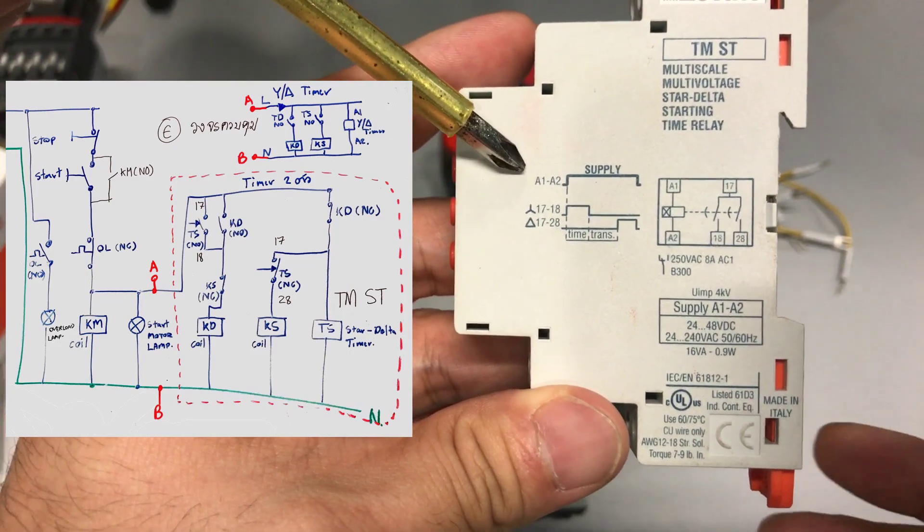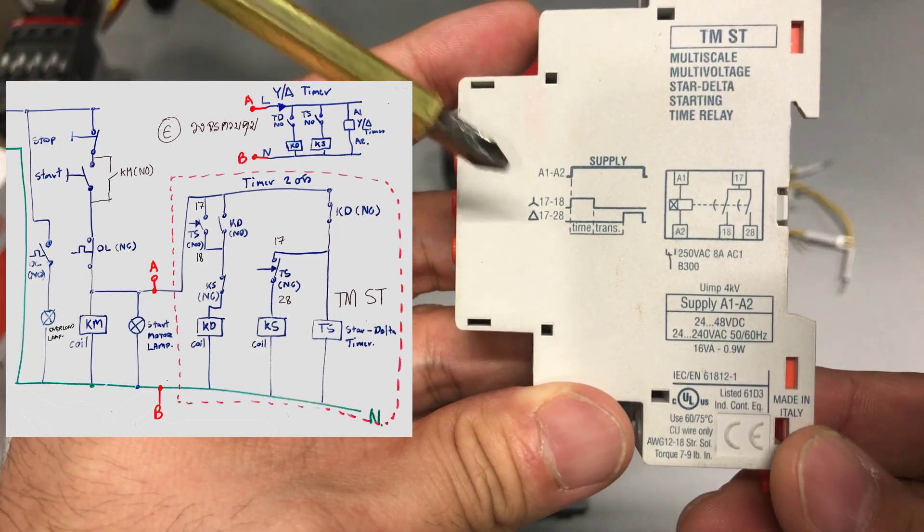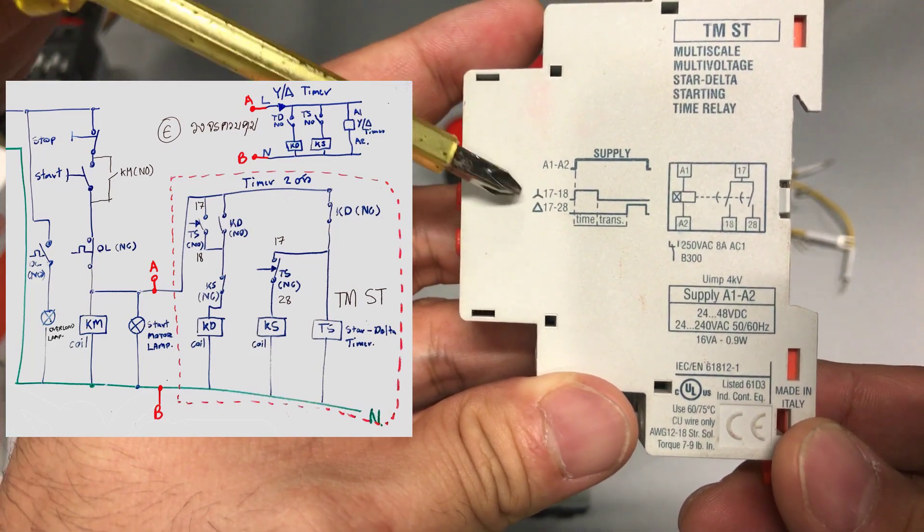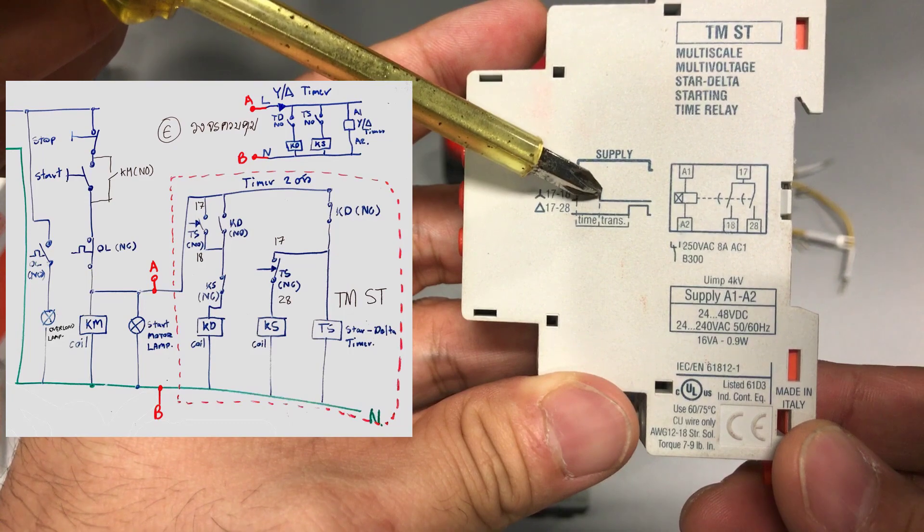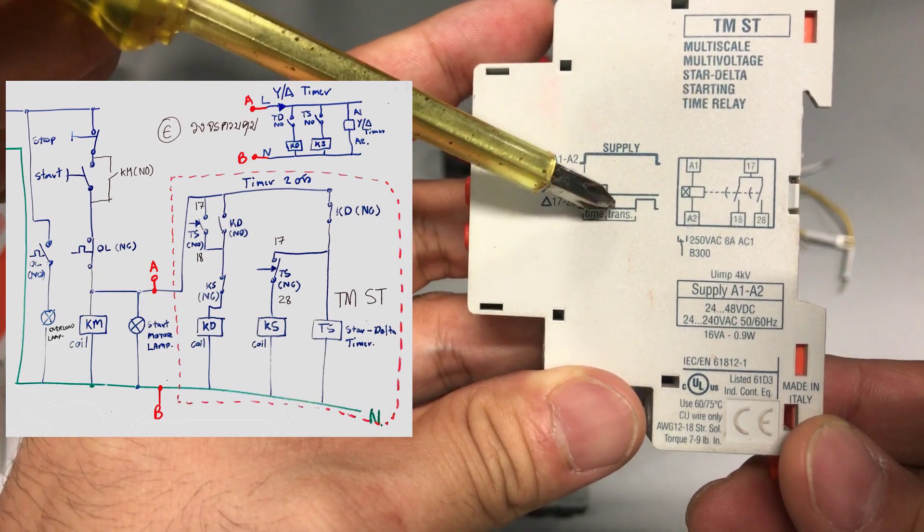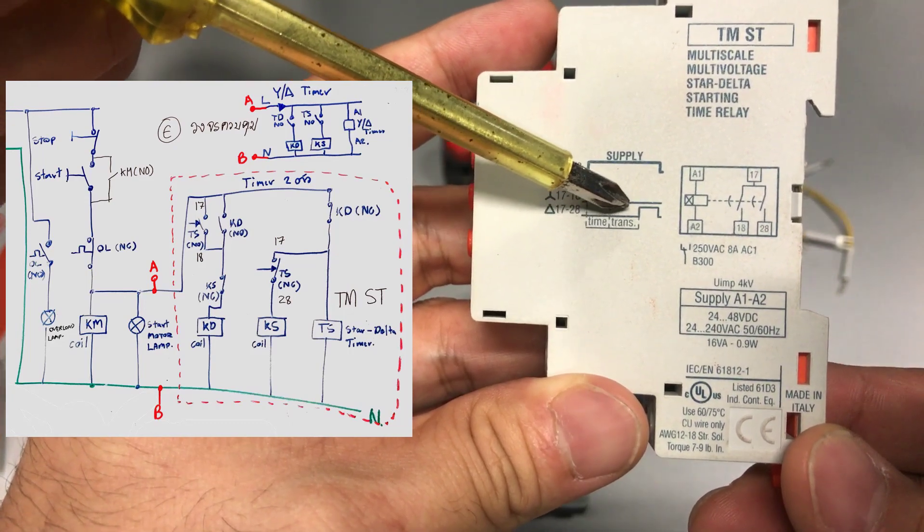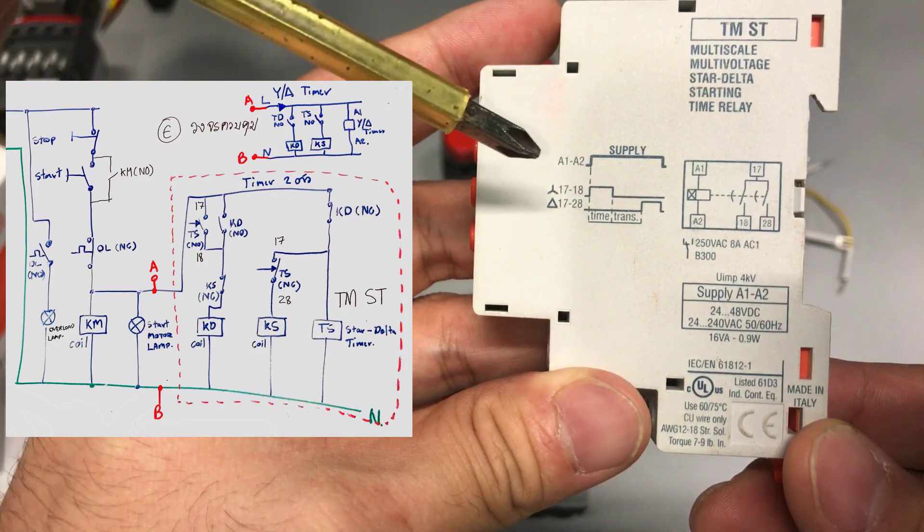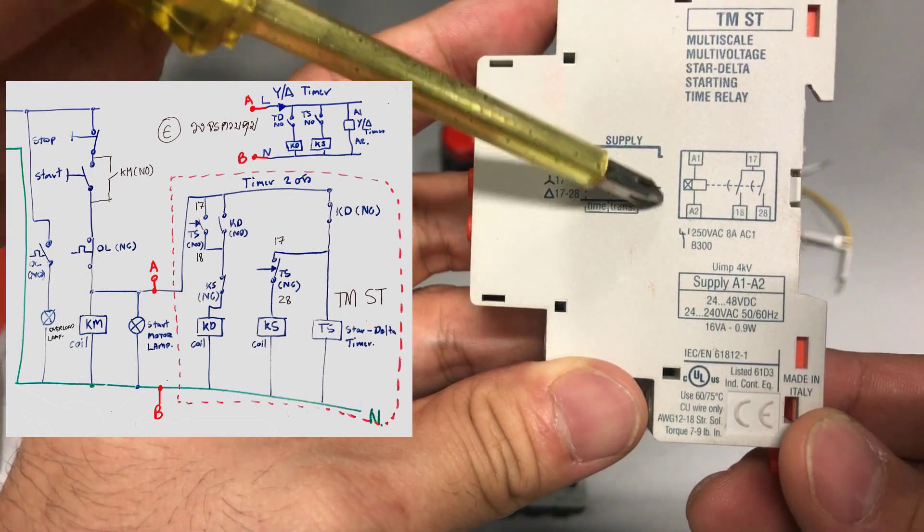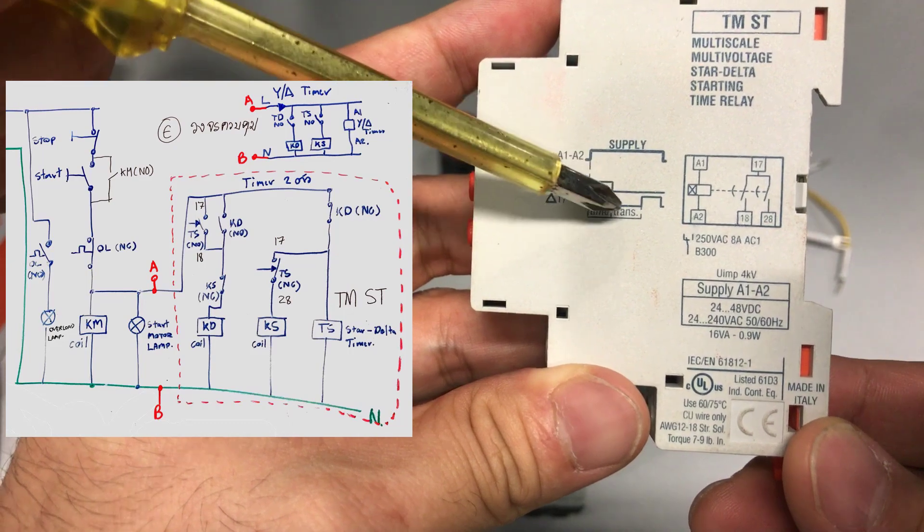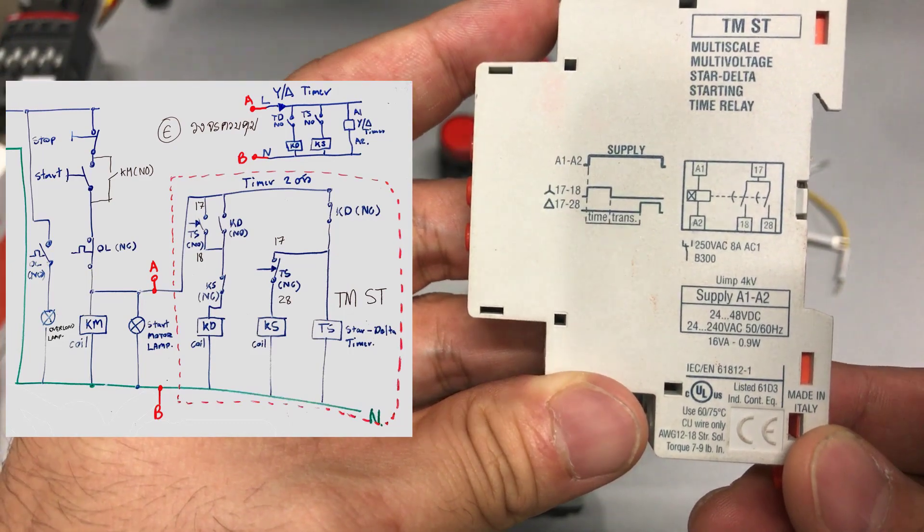As you supply the current from A1 to A2, the star contactor will start first. Then there will be a transition delay. We can set the value of this, then the delta contactor will start. The transition function prevents both the star and delta contactor from working at the same time.